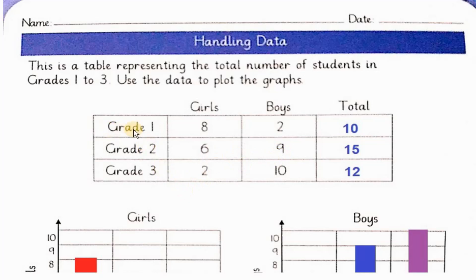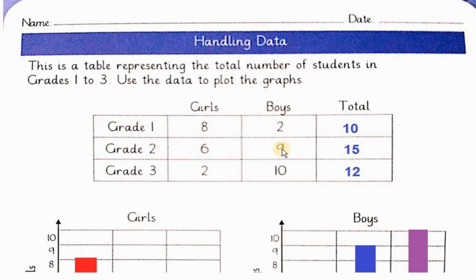Grade one में girls कितنी है? Eight. Boys कितने है? Two. So total students कितने है? Eight plus two is ten. Grade two में girls कितनی है? Six. Boys की تادाد کتنی है? Nine. So nine plus six is fifteen. Total students fifteen.